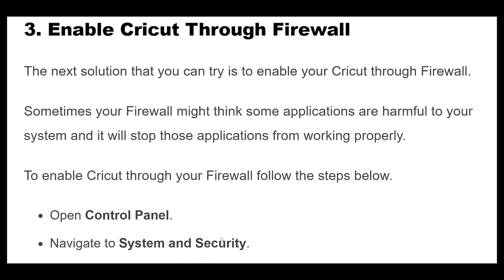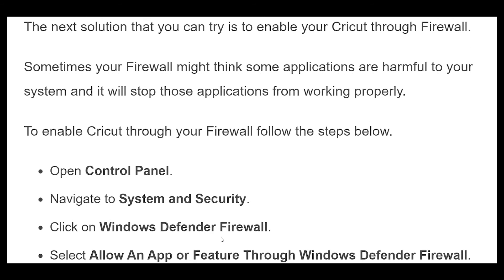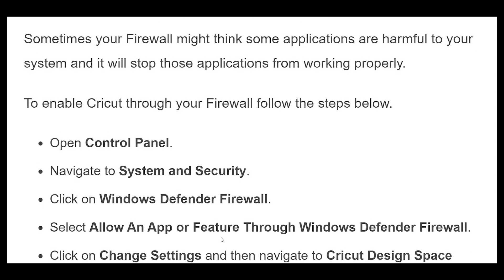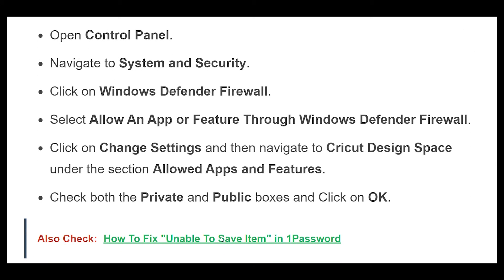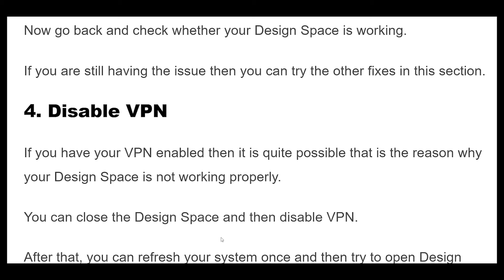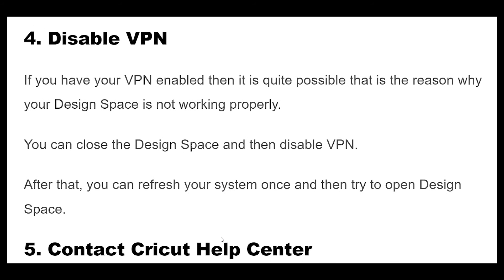The next solution is to enable Cricut through your firewall. Sometimes your firewall might think some applications are harmful and stop them from working properly. To enable Cricut through your firewall: open Control Panel, navigate to System and Security, click on Windows Defender Firewall, then select Allow an app or feature through Windows Defender Firewall. Click on Change Settings and navigate to Cricut Design Space under the Allowed Apps and Features section. Check both the Private and Public boxes and click OK. Now go back and check whether your Design Space is working. If you are still having the issue, try the other fixes.